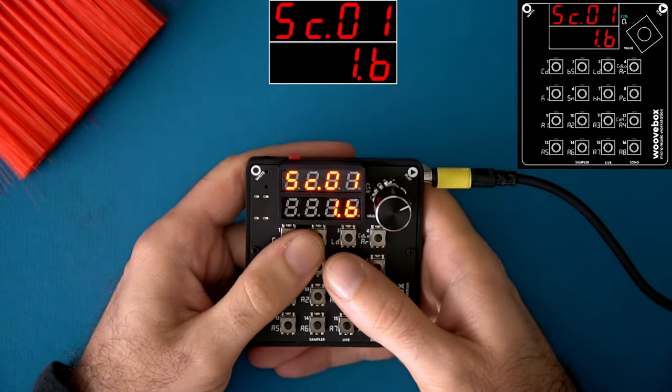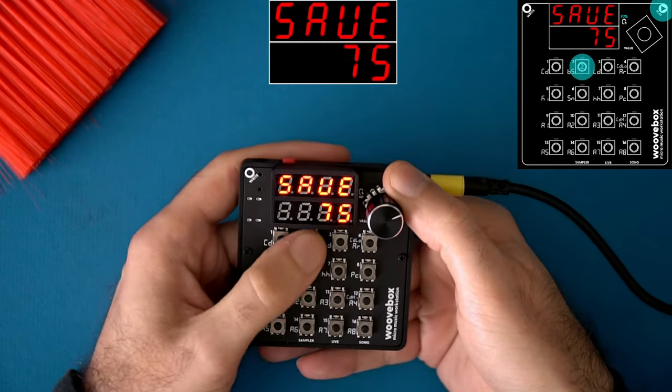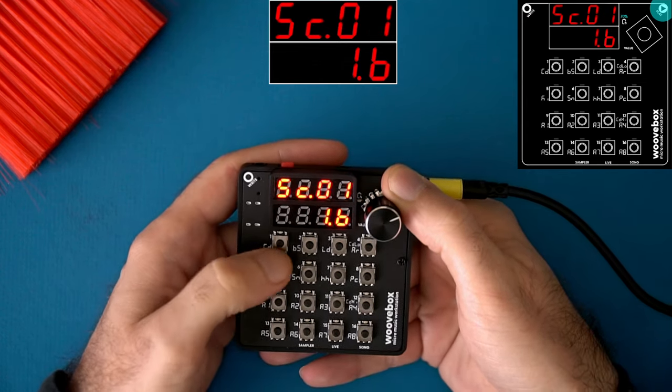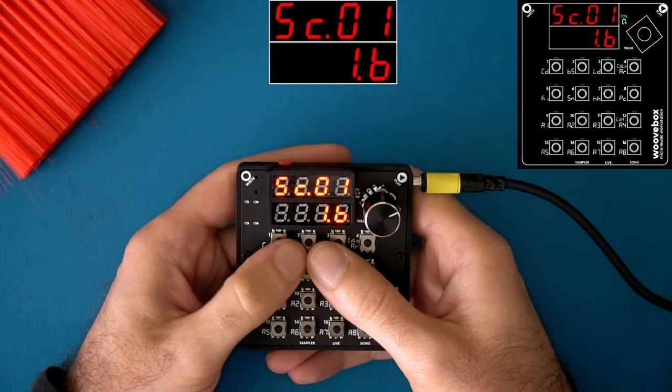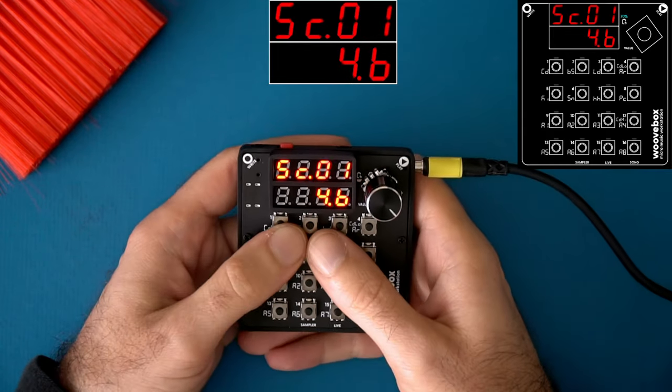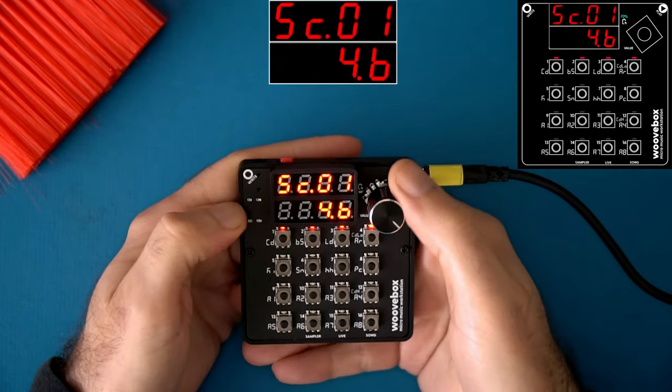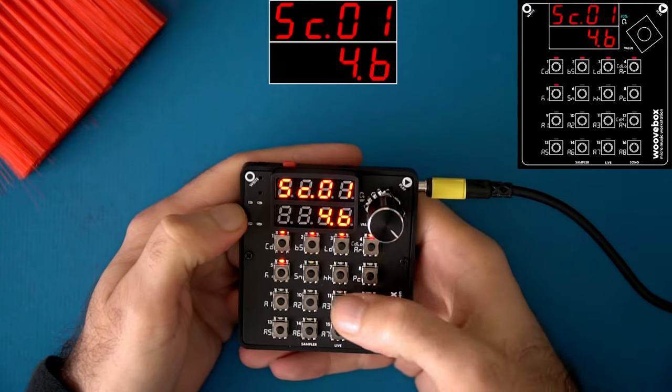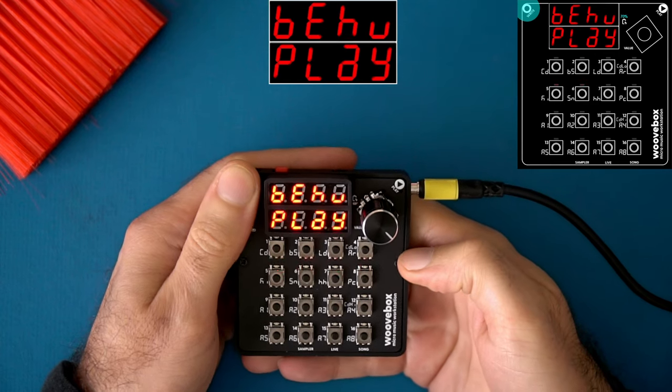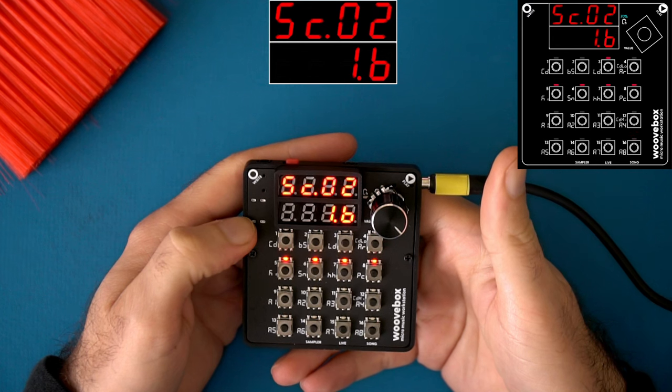Scenes work very similarly to fragments in song mode. So you select the scene by holding play and clicking a track button. So this would be scene six, scene seven, scene one. And you can edit the scene length by holding right and turning the encoder. Let's make this one four bars. And similarly to the live section, you hold right and click tracks to unmute them. So this is now scene one. I can switch to scene two. And let's say we'll unmute the drums and mute the melodics.